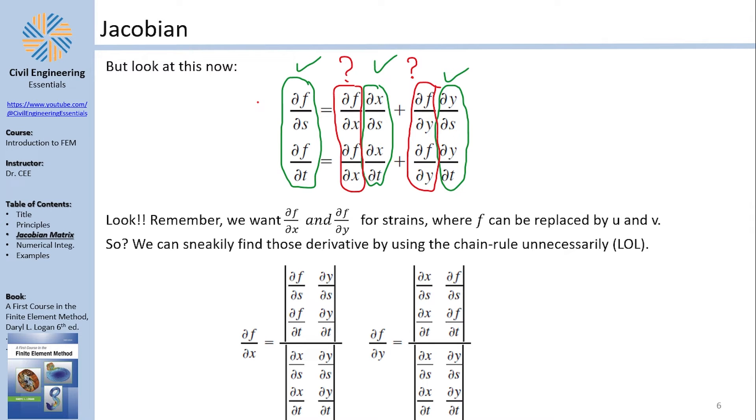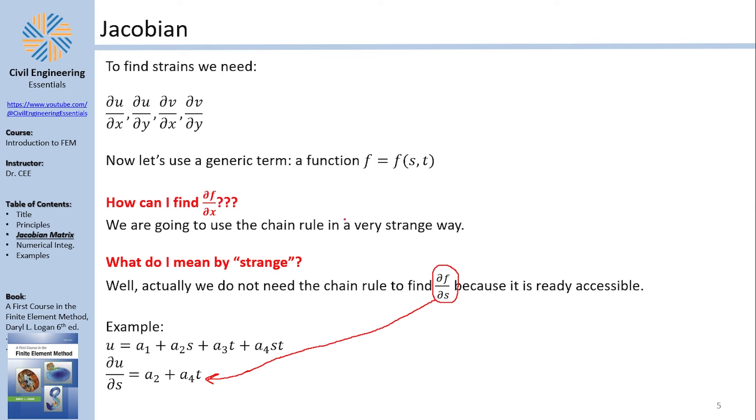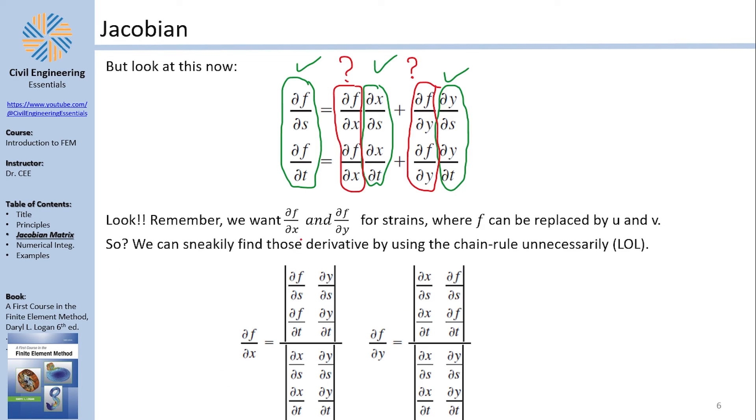So what gives? Why is Daryl L. Logan suggesting to use the chain rule to find the partial derivative of f with regard to s, although I can directly do so? Well, the reason is because we are going to use the chain rule actually not to find this. This can be found directly. So the chain rule's goal, paradoxically, is not to evaluate this. This can be easily evaluated. The goal of the chain rule is to evaluate something else in a sneaky way.